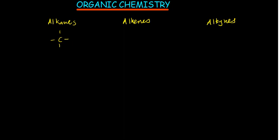In alkenes, there is at least one double bond between two carbon atoms. That means each carbon sharing the double bond is already sharing two electrons on that side, so it only needs two more atoms to be stable. The minimum number of carbons needed to form an alkene is two — you cannot have an alkene with only one carbon.